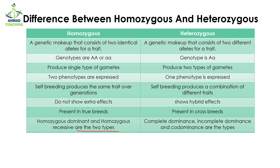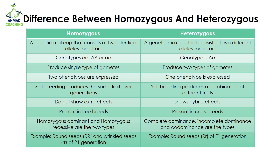Homozygous dominant and homozygous recessive are the two types observed in homozygous organisms, while complete dominance, incomplete dominance, and co-dominance are different types observed in heterozygotes. An example of homozygous is round seeds with capital R capital R and wrinkled seeds with small r small r in the P1 generation, while an example of heterozygous is round seeds with capital R and small r in the F1 generation.